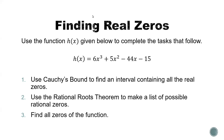Greetings everyone. The purpose of this video is to go over an example of finding all of the real zeros given a polynomial like the one that we see here on the screen, using a completely algebraic process. Now for a function like this, we could graph it and look for all of the points where it physically crosses the horizontal axis to find the real zeros. However, we are going to go through a process here that will show how we can do that algebraically.